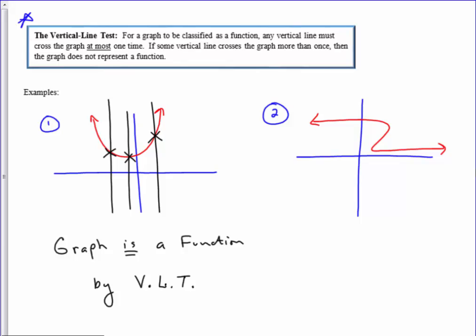This particular graph, if I go and I draw a vertical line here, it crosses only once. Be careful of the definition because it says any vertical line crosses at most once. If I draw a vertical line over here, it crosses once, twice, three times.